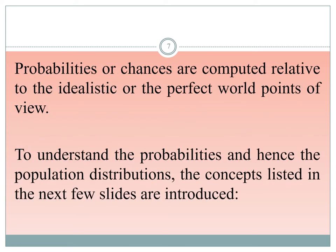Probabilities or chance are computed relative to an idealistic or perfect world point of view. To understand probabilities and hence the population distribution, several concepts are introduced in the next few slides. Usually our probability calculations are for the population. If probability values are provided for a particular event, that represents the probability for the whole population, though sometimes probabilities are calculated based on sample information.